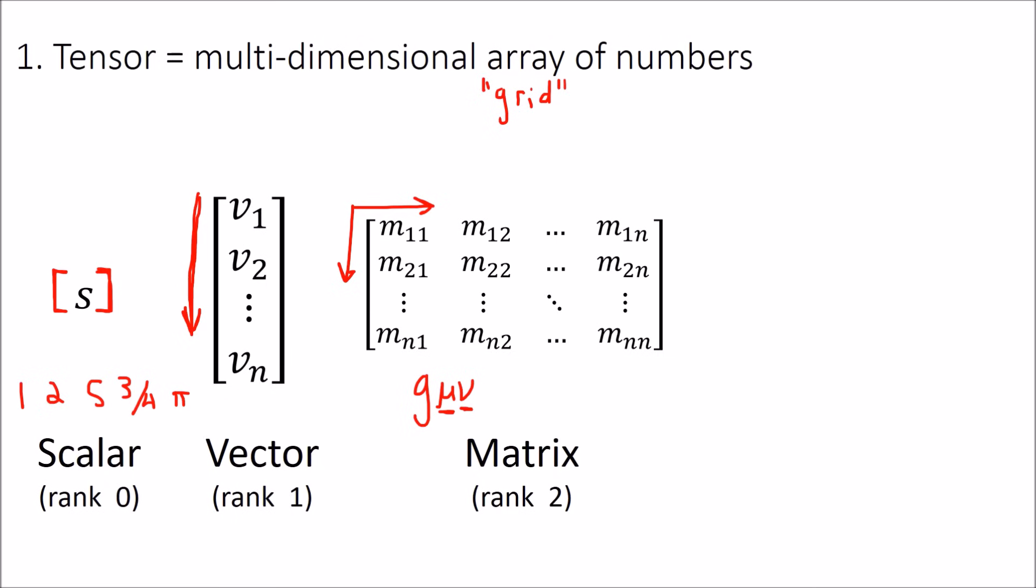If you recall from the last video I mentioned that the metric tensor from general relativity is a rank 2 tensor. These little Greek letters actually stand for numbers that represent the row and column of the particular entry of the matrix. So the metric tensor is really just a matrix.